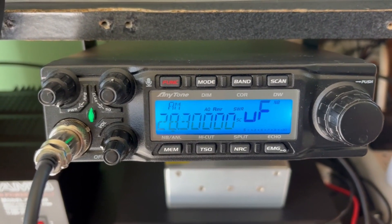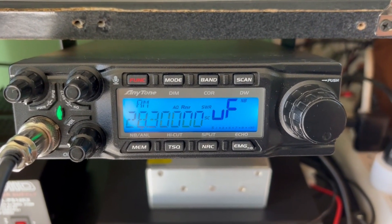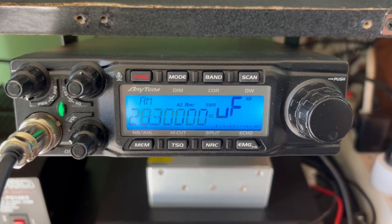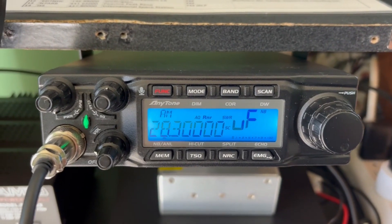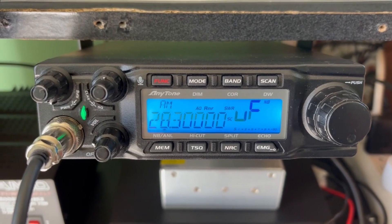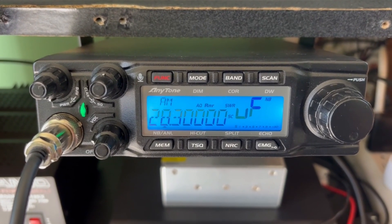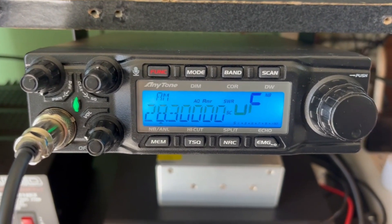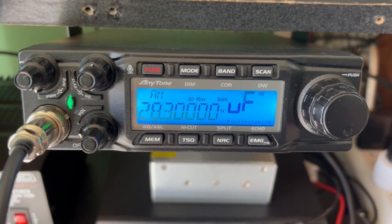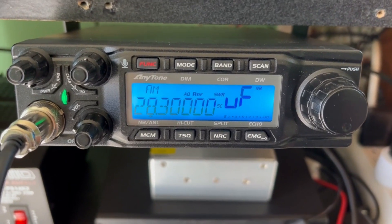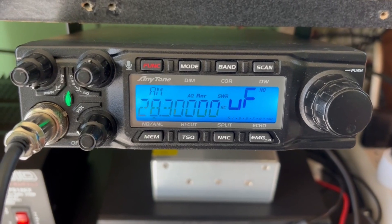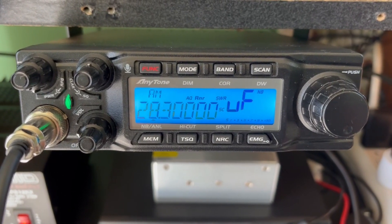Hi welcome back, today we are going to test the power output of the Anytone 6666 Pro 10, 11, 12, 15 meter radio. We're going to test AM, FM, upper and lower sideband and see what kind of power we can get out of this radio.